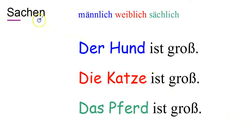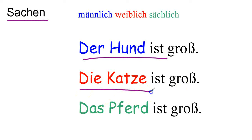In English we just say 'the' for everything — the star, the duck, the computer, the desk, the chair, the keys — but in German all those 'the's have to be der, die, or das. Der Hund ist groß — the dog is big — even if it's a girl dog, it's masculine. Die Katze ist groß — the cat is big — even if it's a male cat, it's feminine. And das Pferd ist groß — the horse is big — whether it's a boy or girl horse, in German horse is neuter.